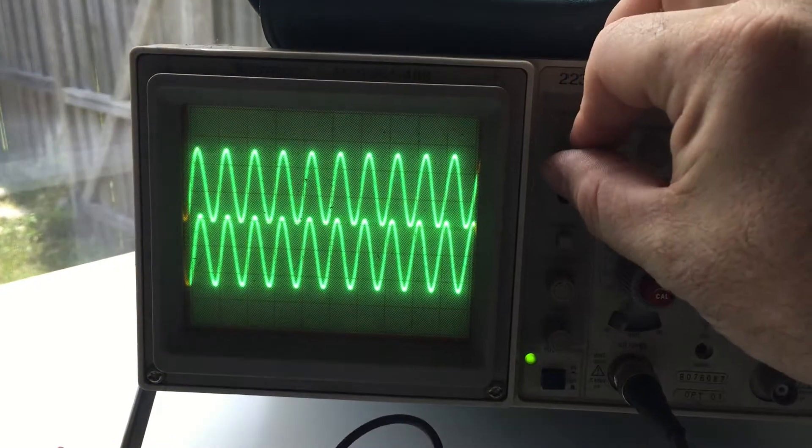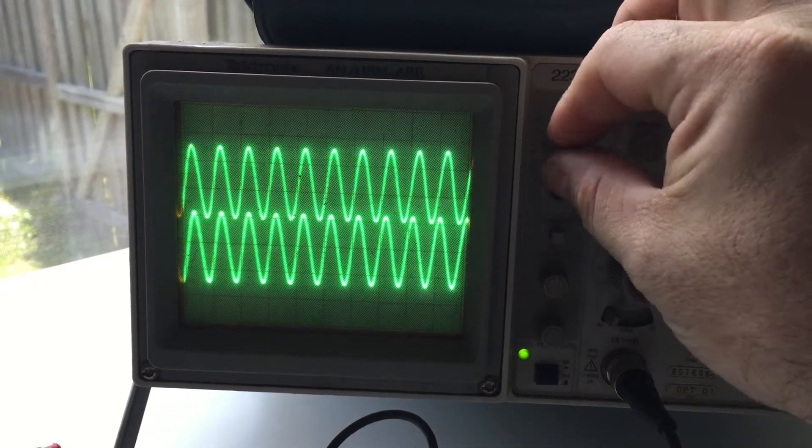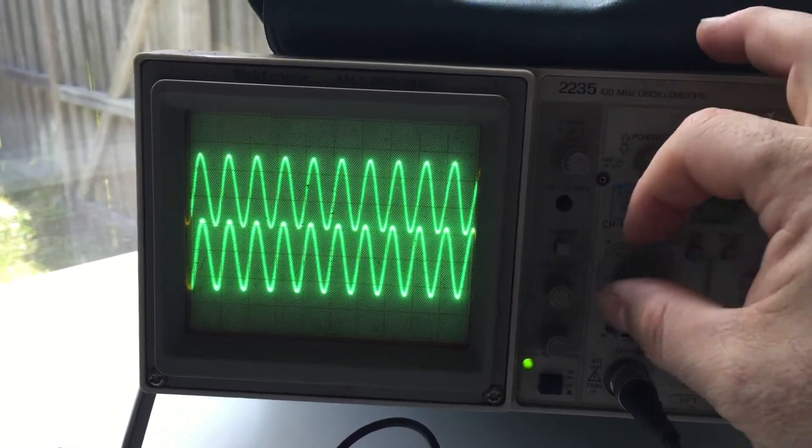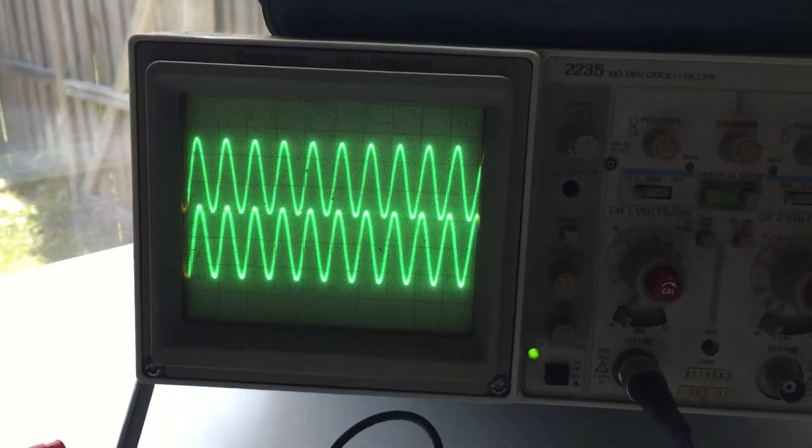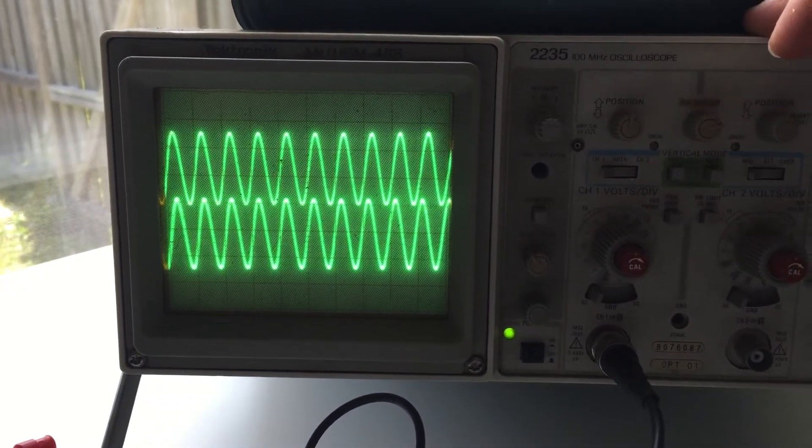And now the A/B intensity knobs. The top one is B, and it's hard to see from the camera, but it does have an effect. I'm going to actually lower the intensity on A or channel one, if I can.